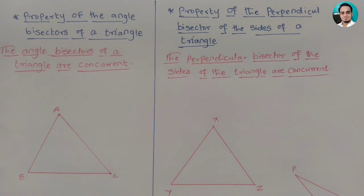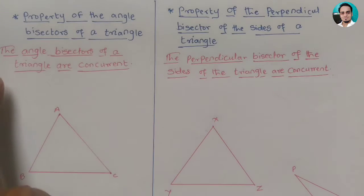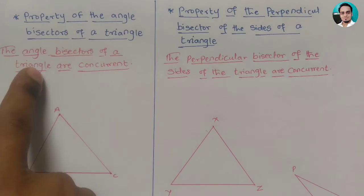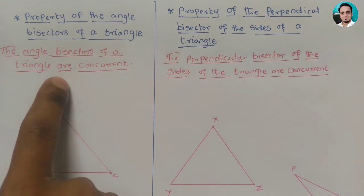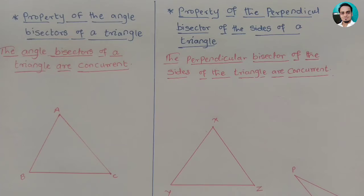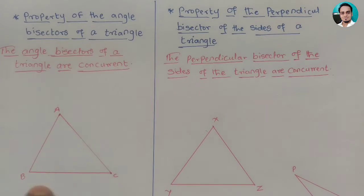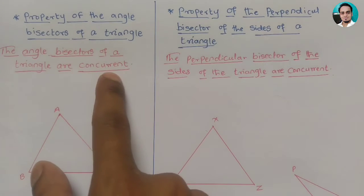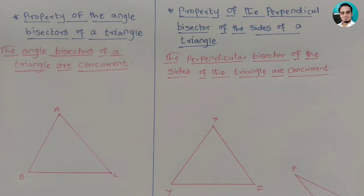Now, let's see the property of the angle bisectors of a triangle. The angle bisectors of a triangle are concurrent. Triangle's three angle bisectors are concurrent. Concurrent means that they all meet at one single point — two or more lines passing through a single point are known as concurrent lines.